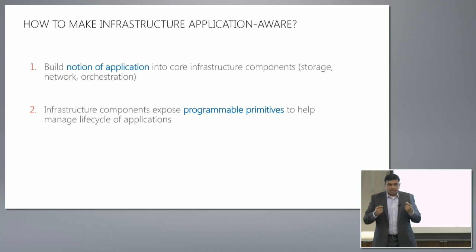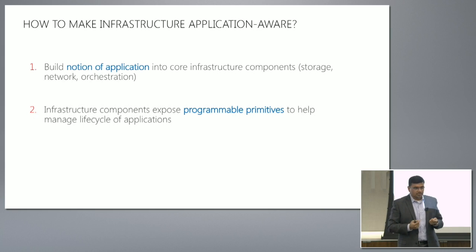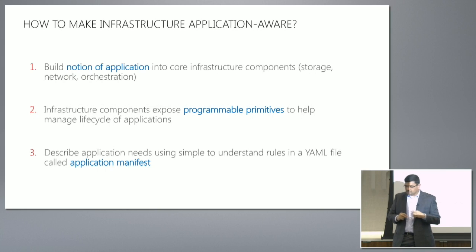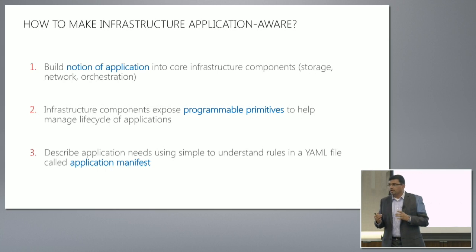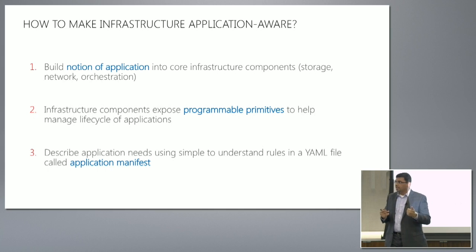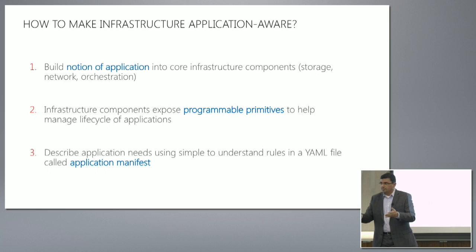The second thing is: now that you have this, can these infrastructure pieces provide programmable primitives that can be used to control them in the manner the application user wants? And the third thing is: you describe the needs of an application in easy-to-understand rules in what we call an application manifest. So three things: one, the application notion is pushed into the infrastructure; two, you have primitives that the infrastructure exposes; and three, you have a manifest file that the developer can write and then unleash onto the infrastructure to bring up the application.